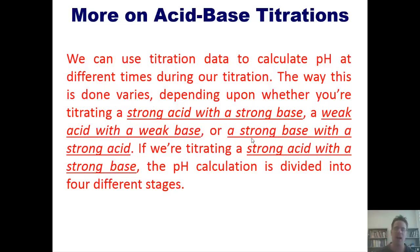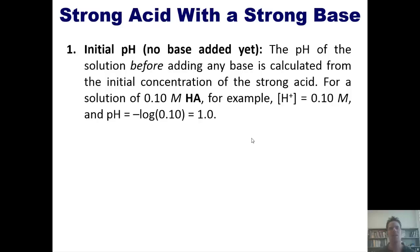Stage one, the initial pH, that is where no base has been added yet. At stage one, where I've got just strong acid and no strong base added whatsoever, the pH of the solution is calculated directly from the initial concentration of the strong acid. For a solution of 0.1 molar HA, for example, because it's a strong acid, it will dissolve completely and release 0.1 molar equivalence of H+. Therefore, the pH is going to be equal to negative log of that number, which is one.